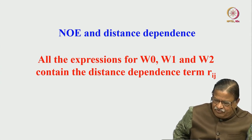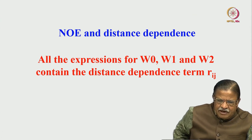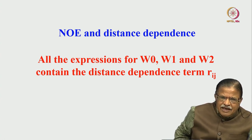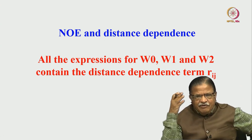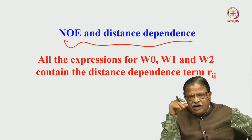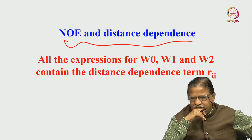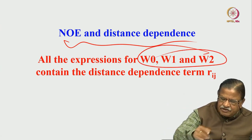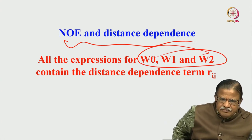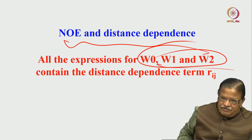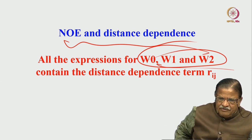So far we have discussed spectral density function, correlation time, diffusion limit, extreme narrowing limit, etc. Now, having done the experiment, I want to get the distance — that is the use of NOE. It gives spatial proximity information. We use the NOE enhancement to arrive at distance information. The transition probabilities W₀, W₁, and W₂ all contain r_ij information — r_ij to the power of 6 is in the denominator, as shown previously.